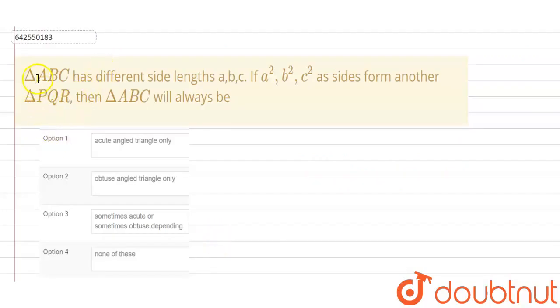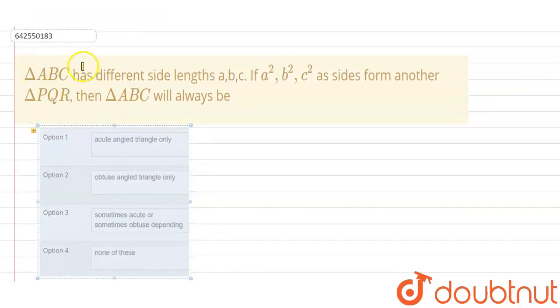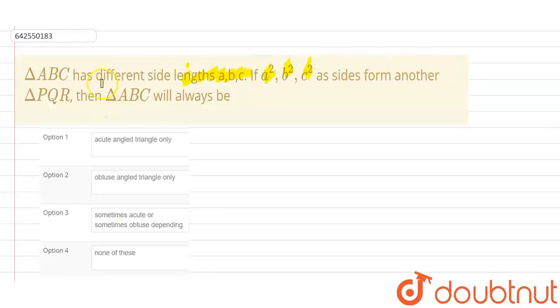So the question says, Triangle ABC has different side lengths of A, B, C. If A square, B square and C square as sides form another triangle P, Q, R, then Triangle ABC will always be.